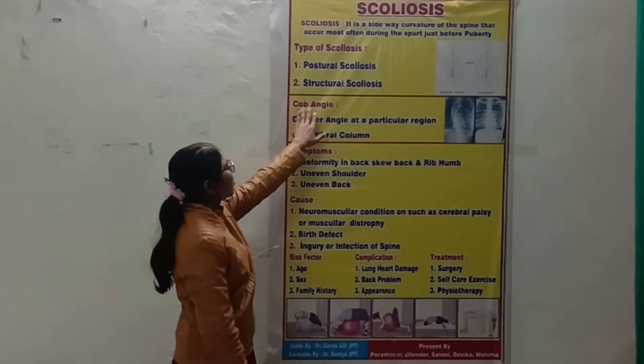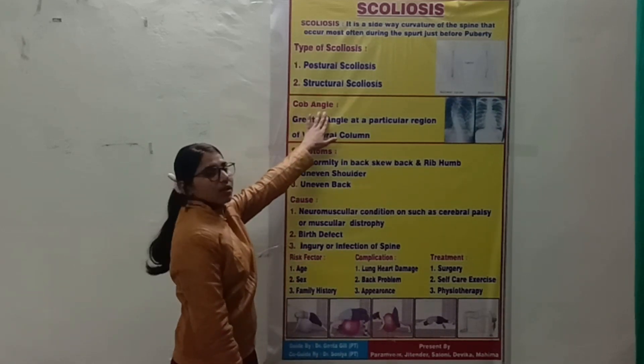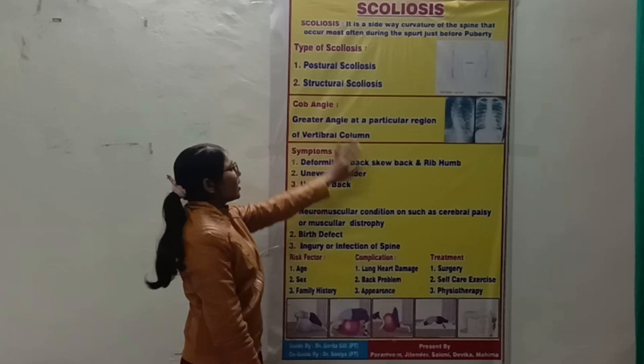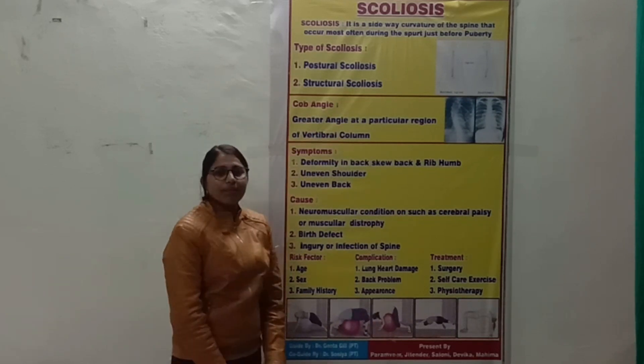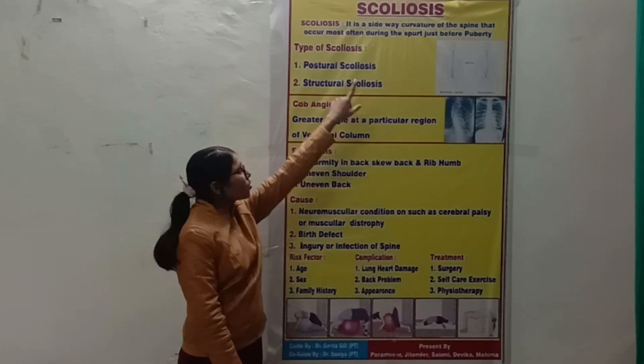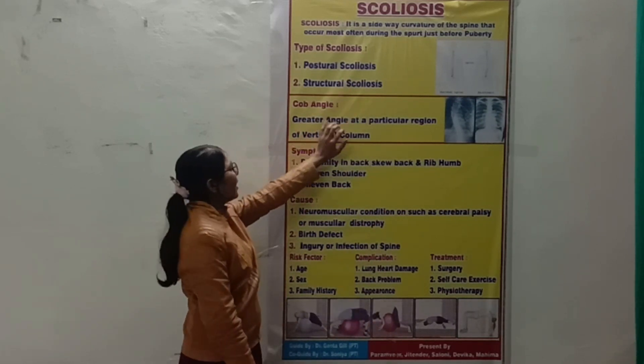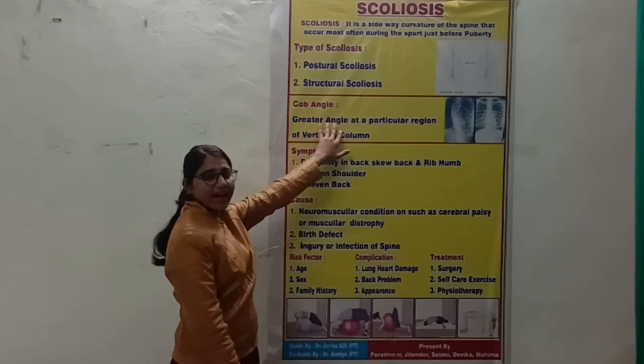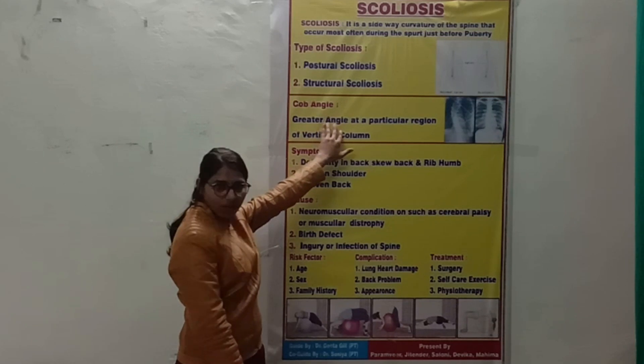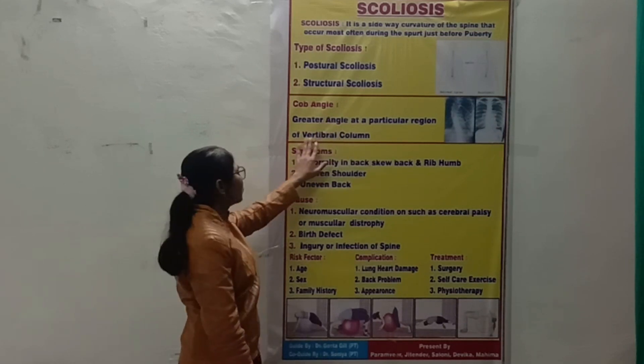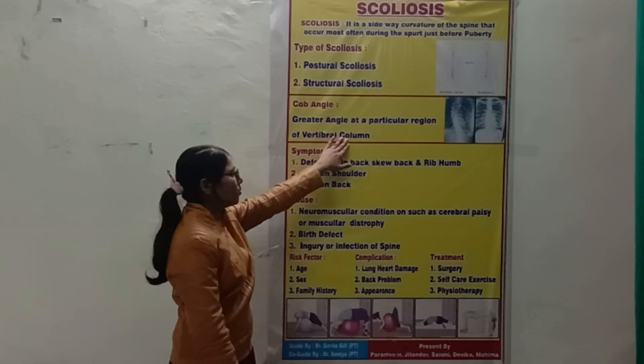The Cobb angle is used for the measurement of scoliosis. It is the greatest angle at a particular region of the vertebral column.